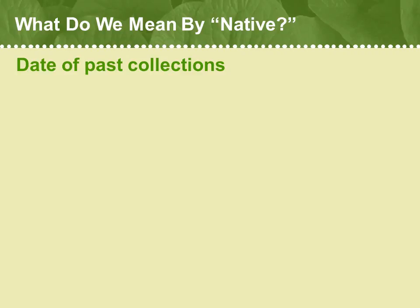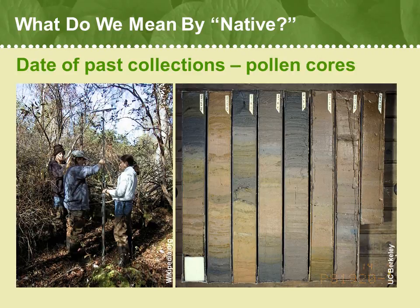So we note down the dates when the first collections of particular plant species began in New England. We can actually go very far back into deep time to understand what species were here long before even the first Native Americans settled here. We do this by taking pollen cores.